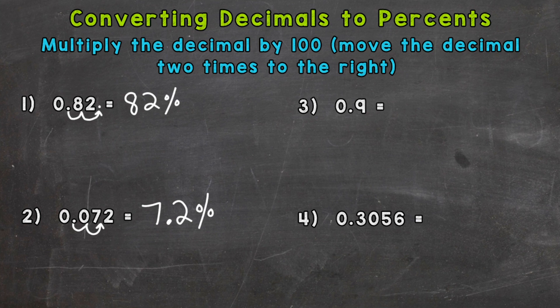Number three, move the decimal twice. One, two. Fill with the placeholder zero. And nine-tenths equals 90 percent.